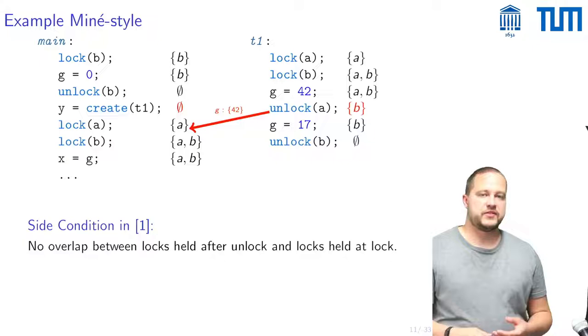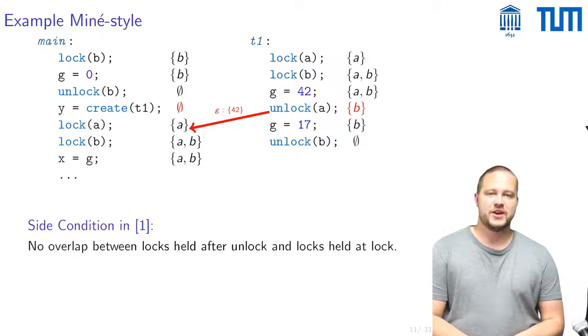And then when we propagate information from unlocks to locks, so here one would propagate this information that G is 42 from the unlock A to the lock A in the other thread and there one would merge this value of 42 into the local state provided that the side condition is met which it is here because the intersection of B and the empty set is once again the empty set.